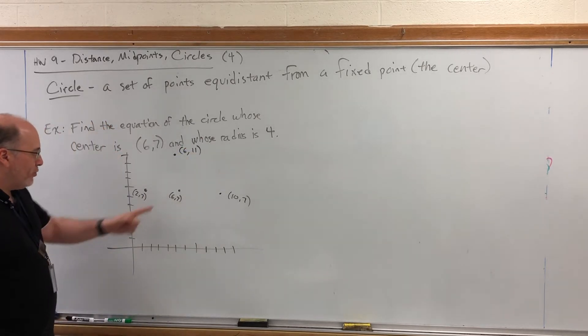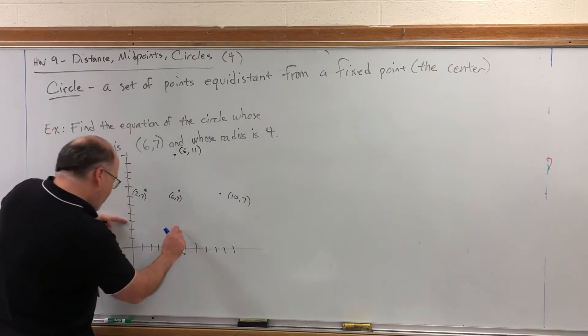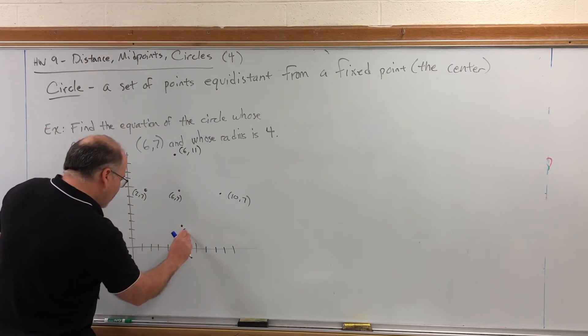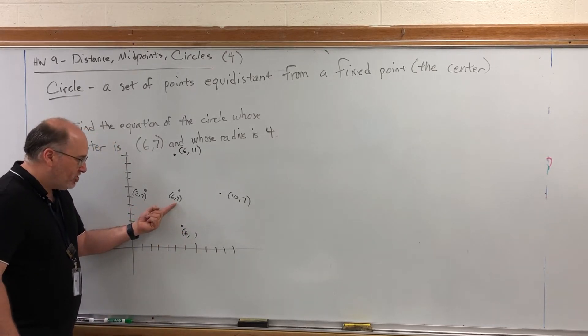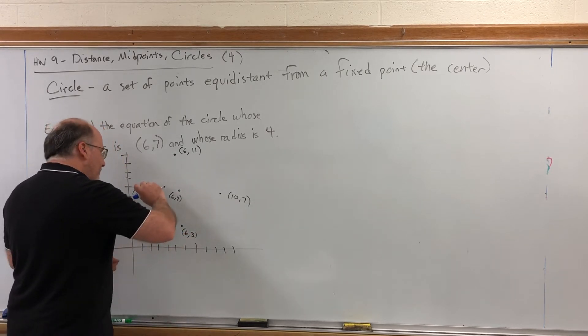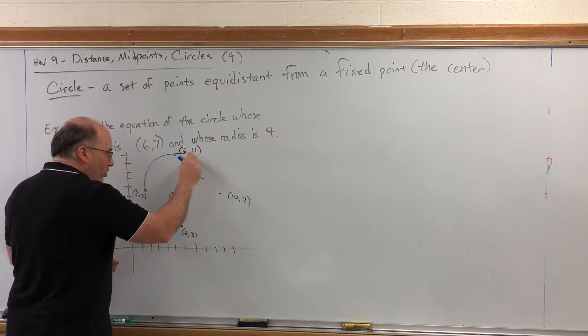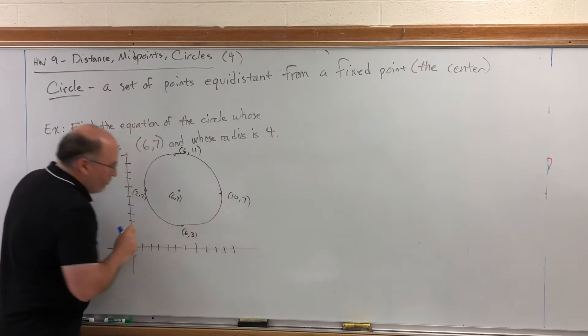And if I went down four spaces from the center, that would put me here. I'm still over 6, but my y value used to be 7. Now, I just lowered it by 4. 7 minus 4 is 3. And that gives me four points that I can draw four quarter circles to make one circle.